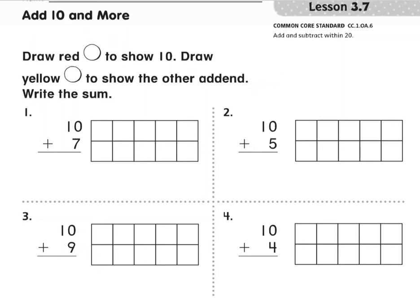So let's get my color here. We are going to use red to show the first addend which is 10. So we're going to fill the 10 frame with 10: 1, 2, 3, 4, 5, 6, 7, 8, 9, 10.